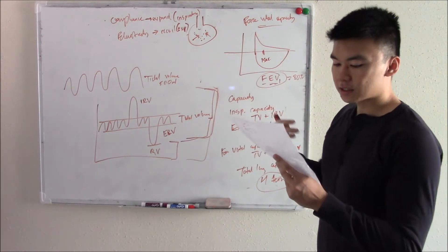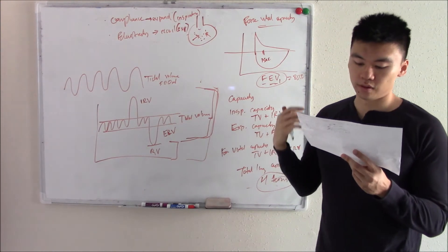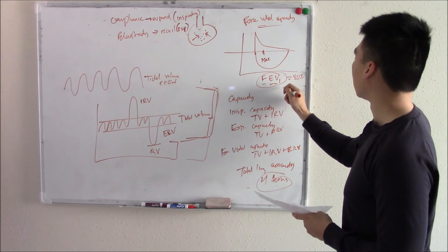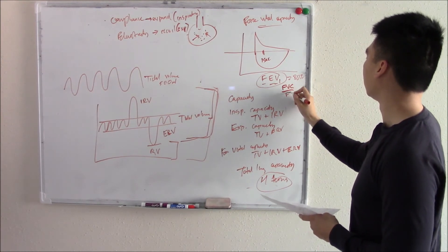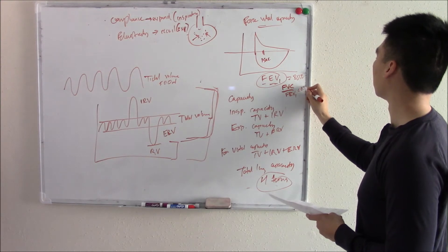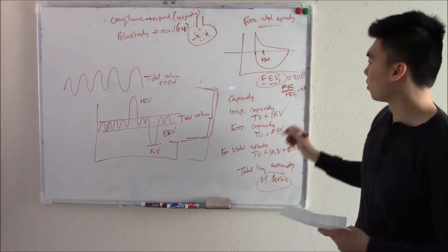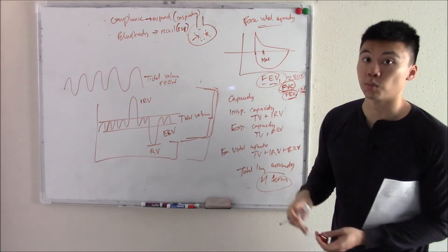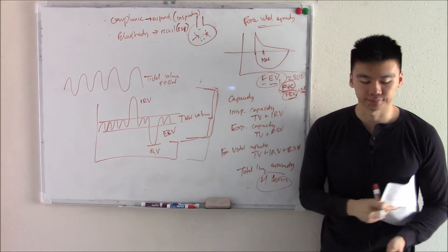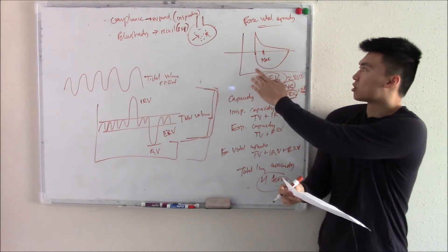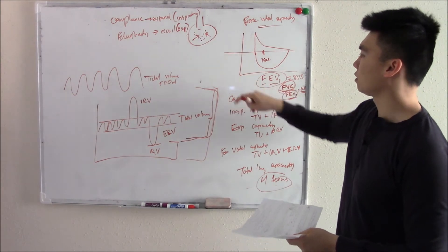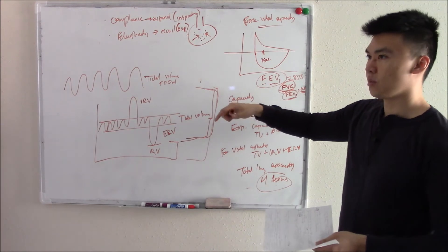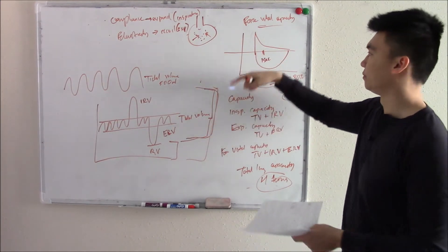If there's any difference in that, we think there might be something wrong with the lungs. FVC divided by FEV1 should equal 0.8 — you're able to expel about 80% in one second. So we have two different charts to measure lung function: one that measures how much you can breathe in and out, and one that measures how much you can forcefully breathe in and out.